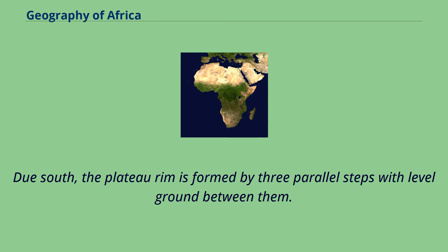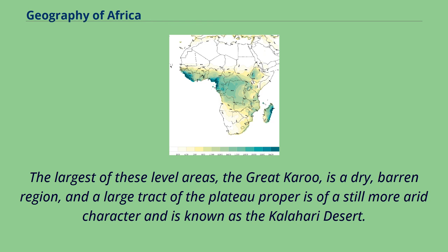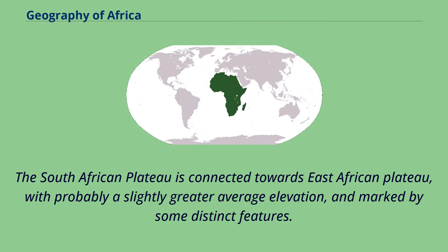Due south, the plateau rim is formed by three parallel steps with level ground between them. The largest of these level areas, the Great Karoo, is a dry, barren region, and a large tract of the plateau proper is of a still more arid character, known as the Kalahari Desert. The South African plateau is connected towards the East African plateau, with probably a slightly greater average elevation, and marked by some distinct features.